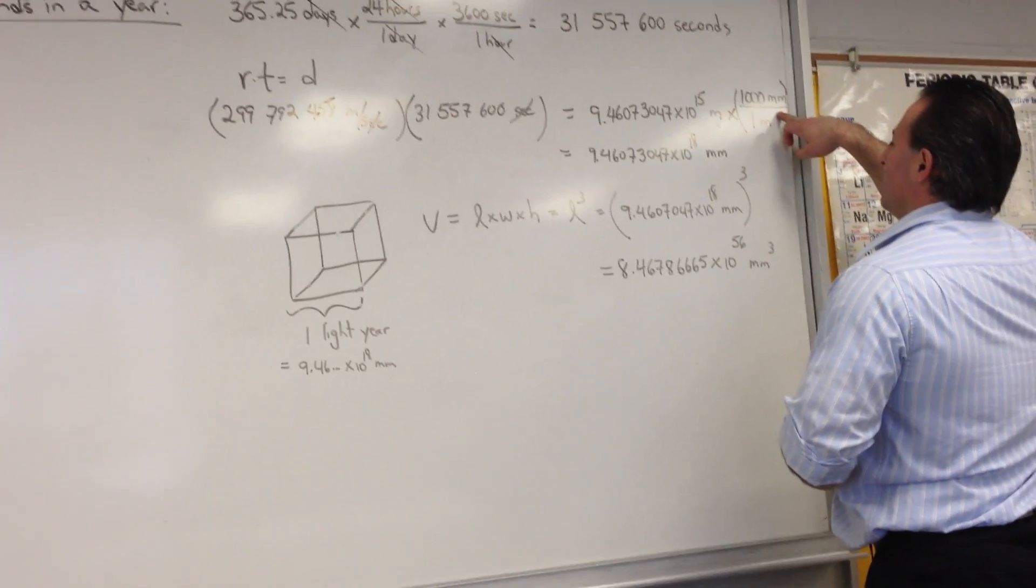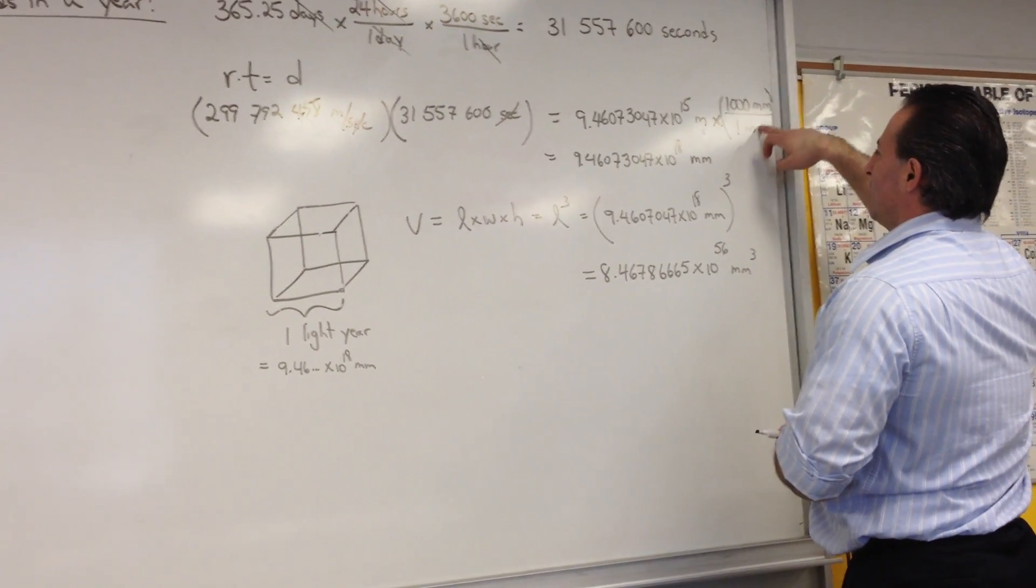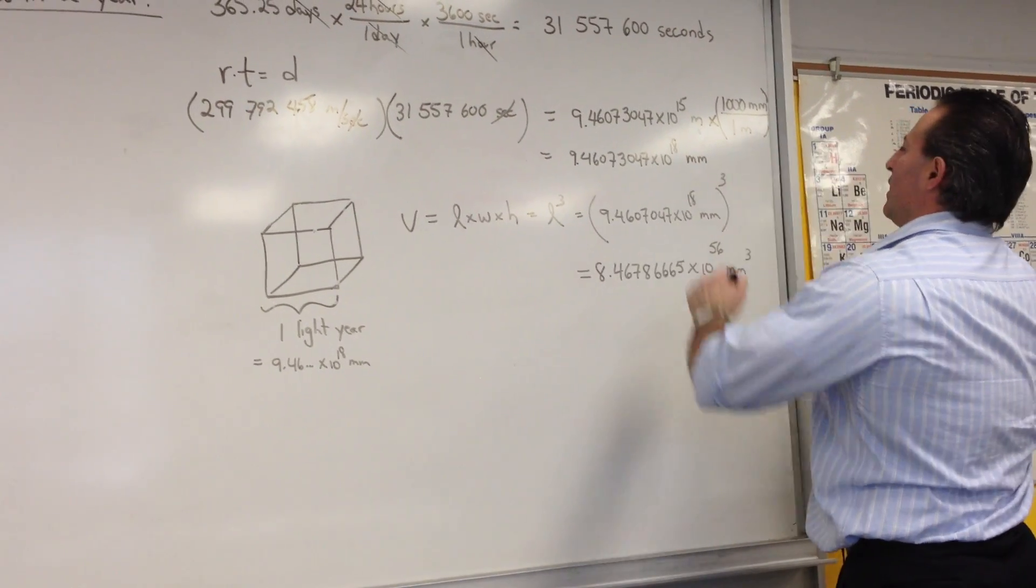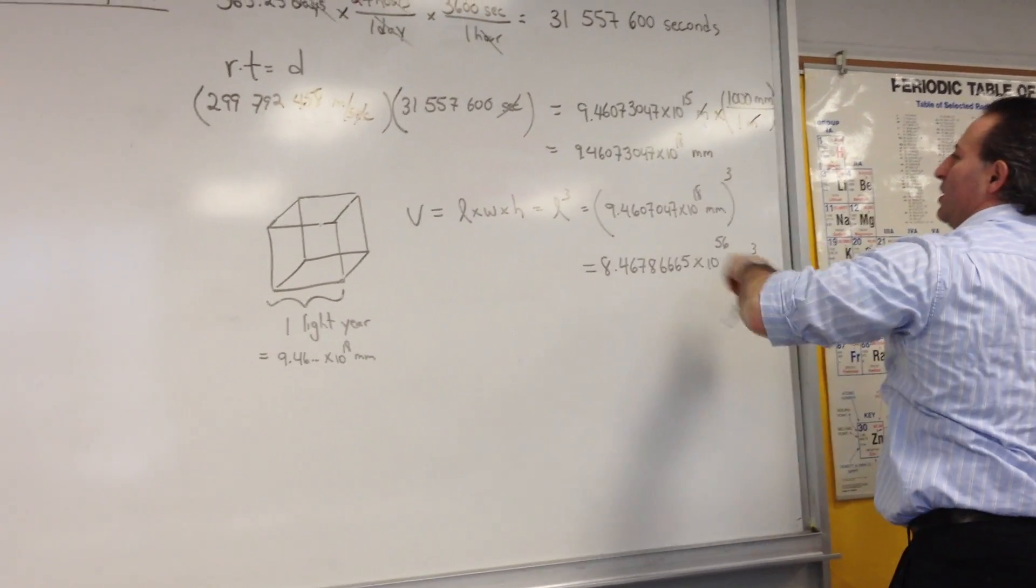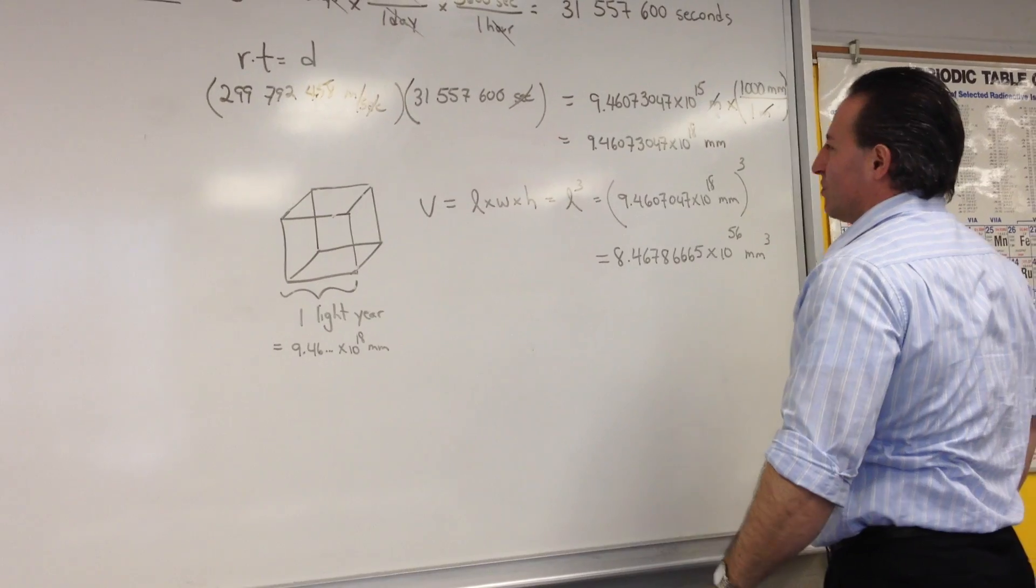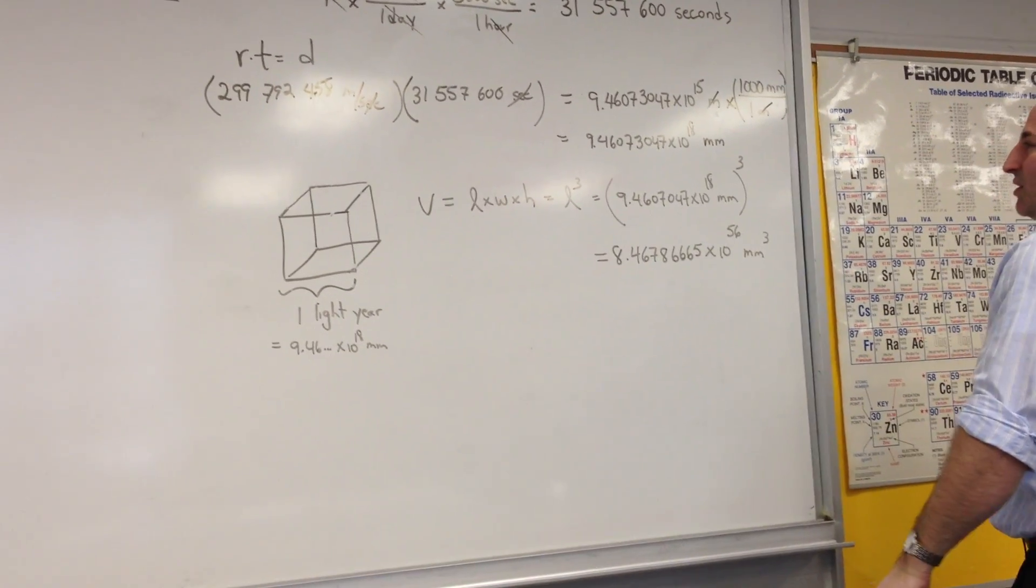We then convert that number into millimeters by multiplying by 1000 to 1. That allows us to cancel meters. So light covers 9.46 times 10 to the 18 millimeters in one year.